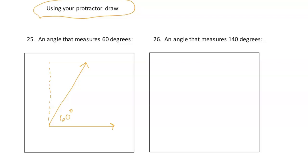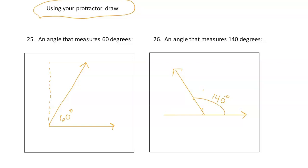An angle that measures 140 degrees — without a protractor, I know this angle is going to be on a straight line. If I put a perpendicular line, that would be 90, so I need to go a little bit bigger than 90. So this angle right here is 140 degrees — see if you can eyeball it and get a sense of this without using a protractor.